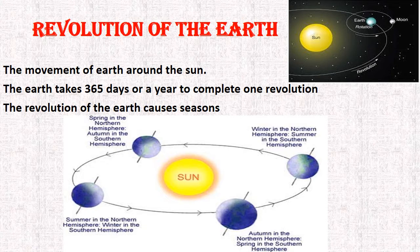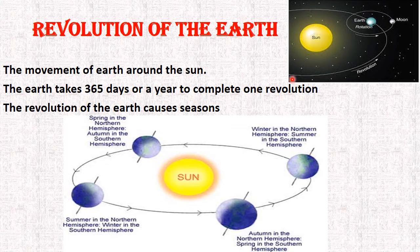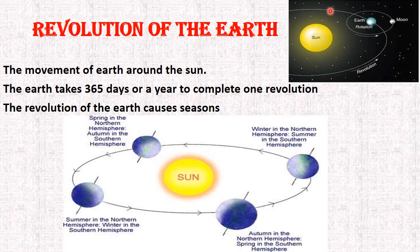Let's talk about the revolution of the earth. Revolution means a circular movement of an object around another object. The movement of the earth around the sun is called revolution. As you can see in the picture, there is a sun and there is the earth. The picture shows the movement of the earth around the sun on its particular path. This path, shown as an imaginary line, is its orbit — its specific path. Every planet moves in its own orbit. The earth takes 365 days, or one year, to complete one revolution.